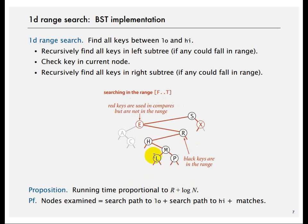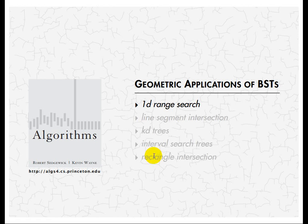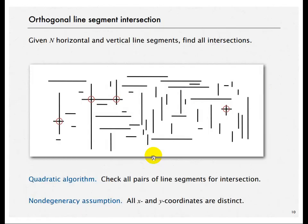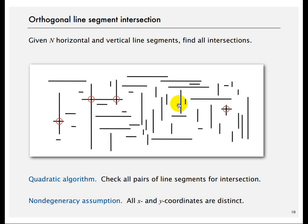Now let's look at geometric applications of binary search trees. Say there are a set of lines in a graph and you have to find how many intersections they have. A naive algorithm checks every line against all others — that's O(n²), which is very bad. Instead, imagine moving a sweep line slider from left to right across all the lines.